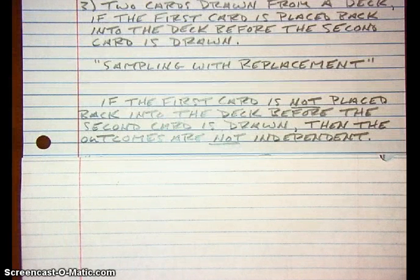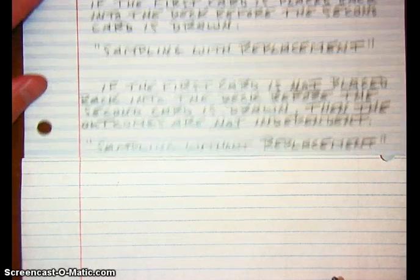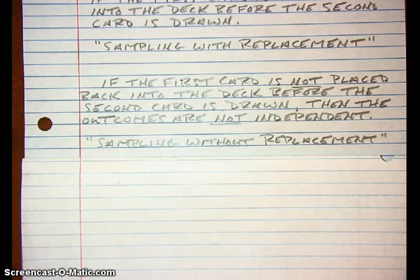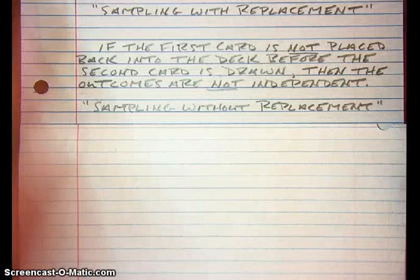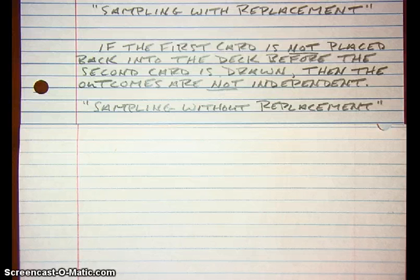Sampling with replacement is a very common terminology used in statistics. If you don't put the first card back into the deck before the second card is drawn, then the outcomes are not independent, and that's important to keep in mind. This is what we call sampling without replacement — you're not putting the first card back before you draw the second card, and because of that, outcomes on the two draws are not independent.